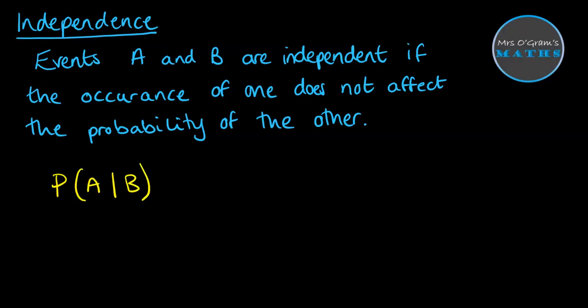So if we think about the probability of event A given that event B has happened, now if those two things are independent, it won't make any difference that event B happened. That thing won't change what happened to A, so therefore this would still just be the probability of A. So if you know that that's true, you know your two things are independent.